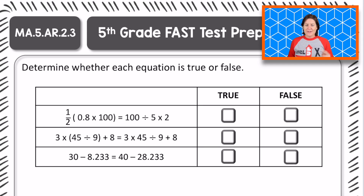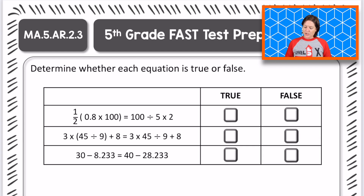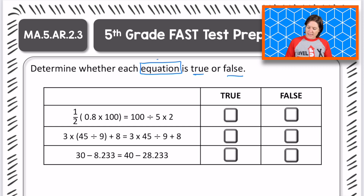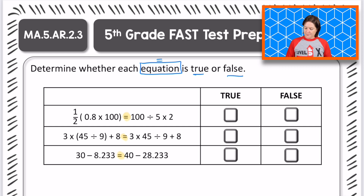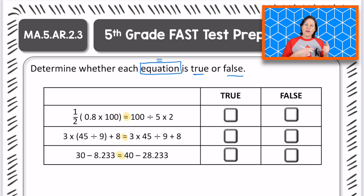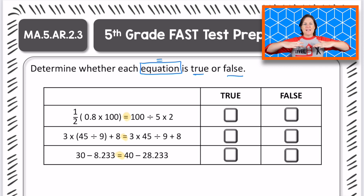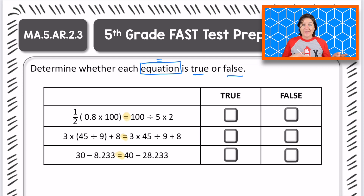Welcome back, fifth grade. Let's go ahead and read this one. It says to determine whether each equation is true or false. Equations have equal signs — that's why they're called equations. We see those equal signs right here. When we're determining if they're true or false, we need to look at the left side and the right side and see if they are equal or the same value on each side.